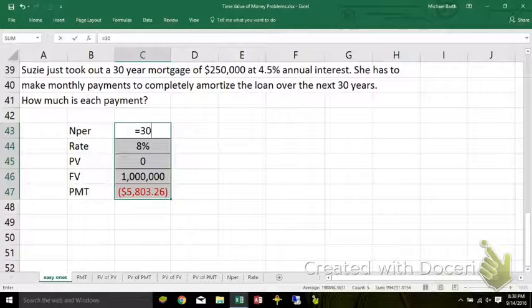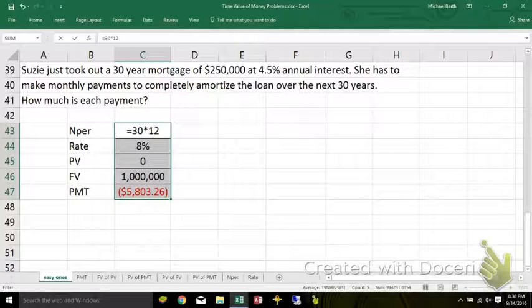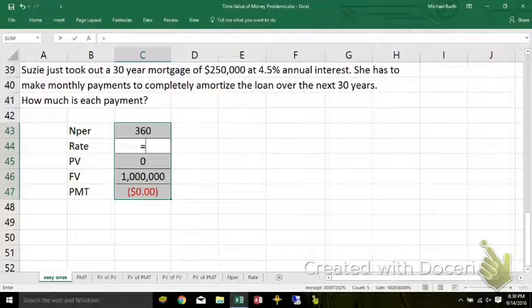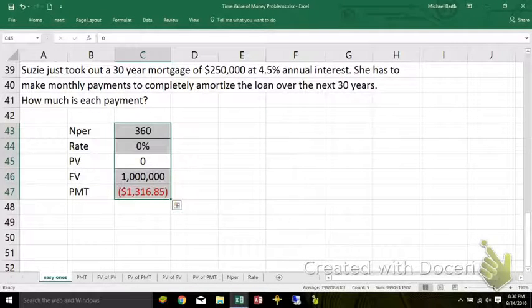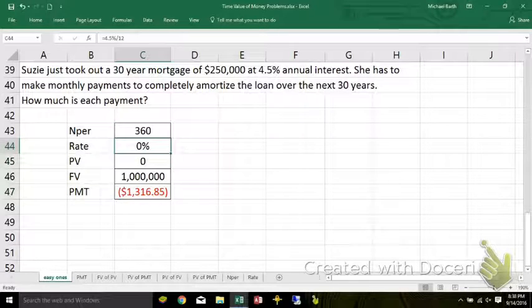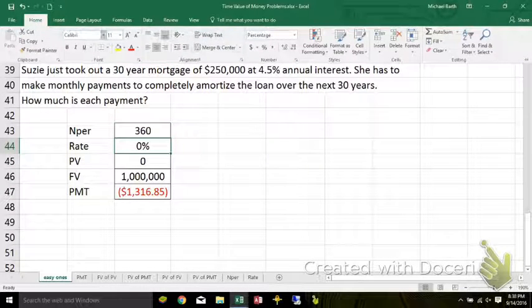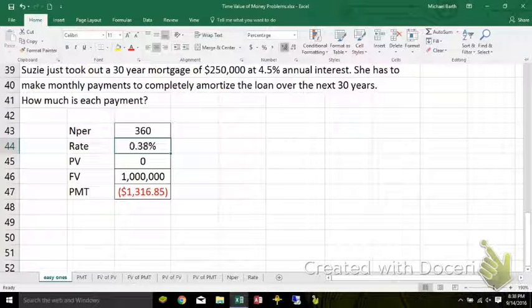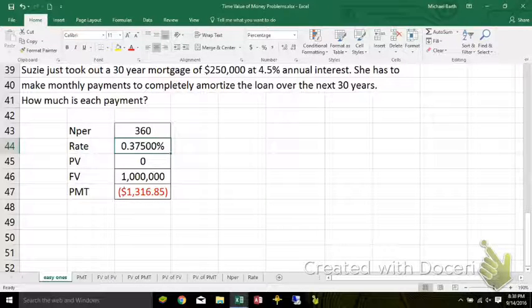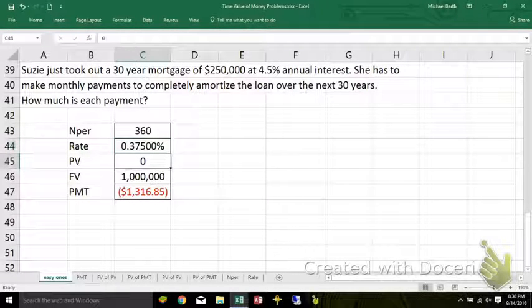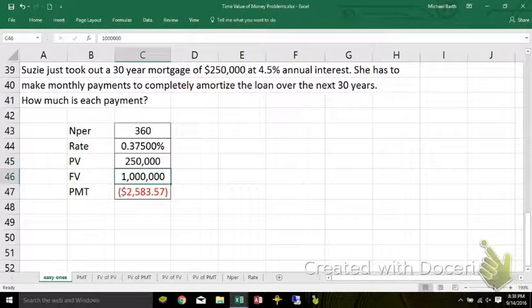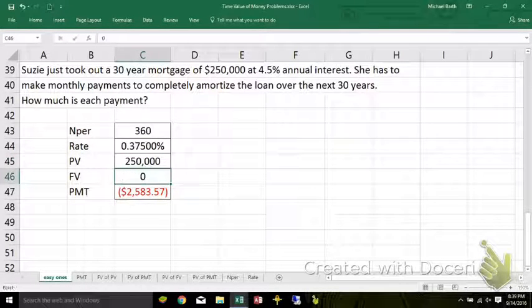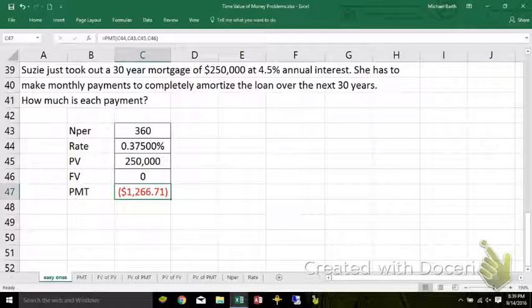It's a 30 year mortgage with 12 payments per year. That's 360 payments. It's 4.5% interest, but that's 4.5% annual. I'm paying monthly. So I divide that by 12. Go back up here and show some decimal places. The present value of the loan, they gave me $250,000. After I made my 360th payment, I won't owe them anything.